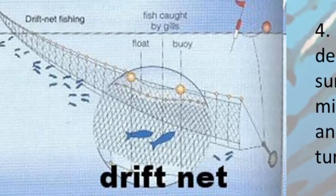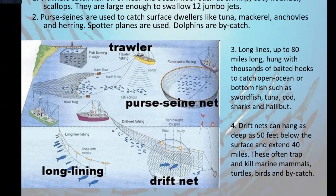Lastly, we have drift nets. Drift nets are nets that are hung as deep as 50 feet below the surface and they can extend up to 40 miles in length, suspended from floats or buoys. These are designed to catch fish as they swim along, but unfortunately these also trap and kill marine mammals, turtles, birds, and other bycatch.